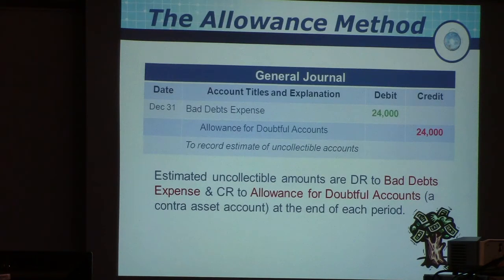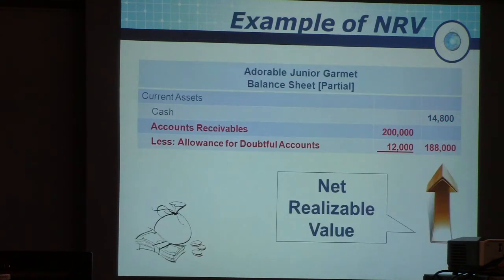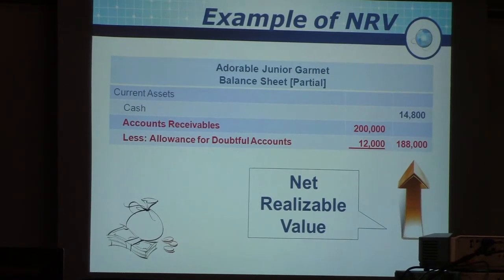ADA is a contra-asset account. It comes right under AR on the balance sheet and carries a credit balance. On the balance sheet, you can see cash, then accounts receivable, and then you subtract the Allowance for Doubtful Accounts to arrive at the net realizable value.